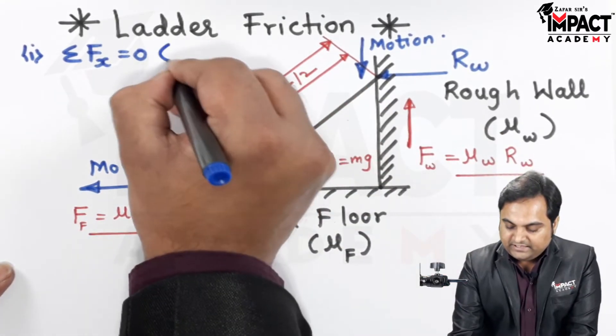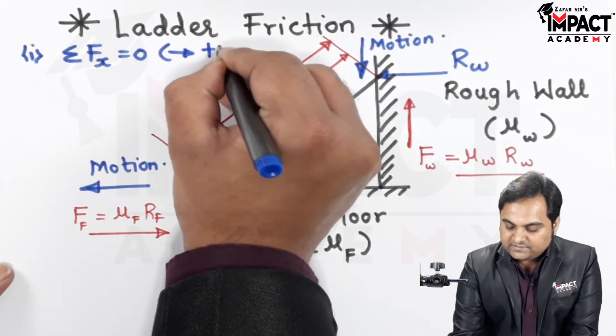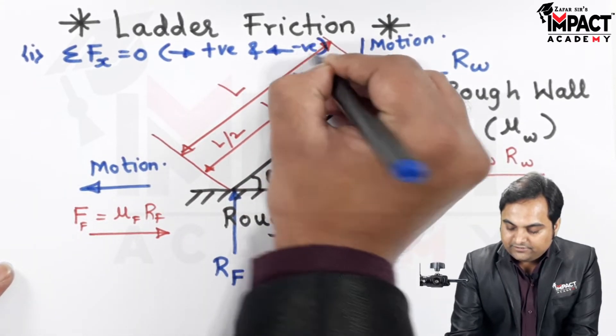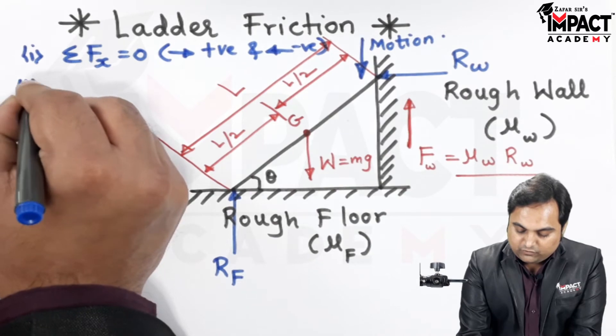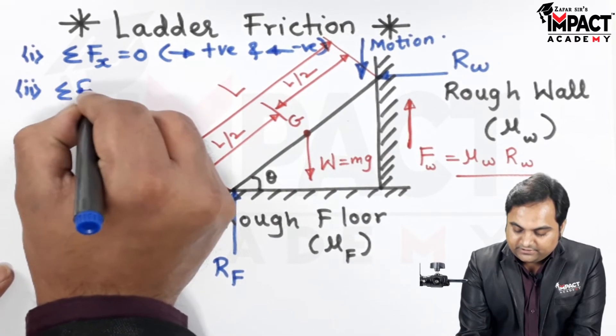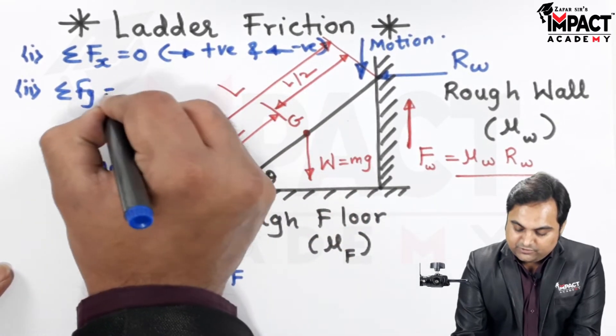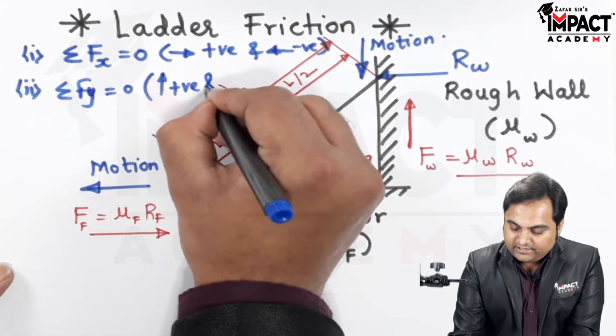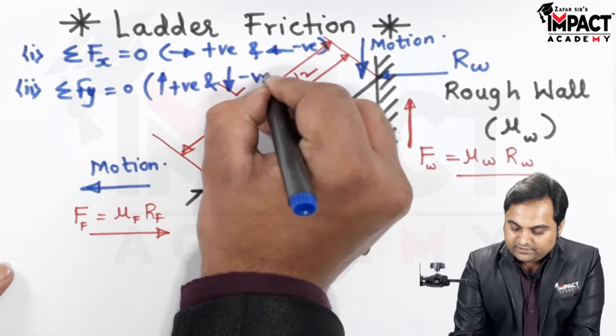Similarly, we can solve it by taking the second condition of equilibrium. Summation of Fy is equal to zero, wherein upward forces are positive and downward forces negative.